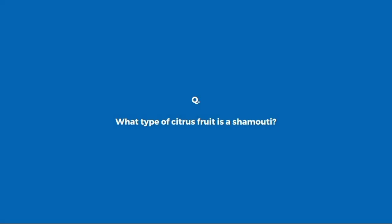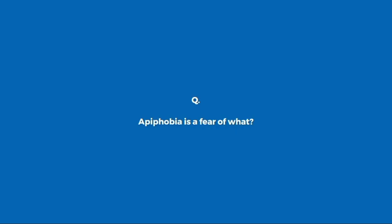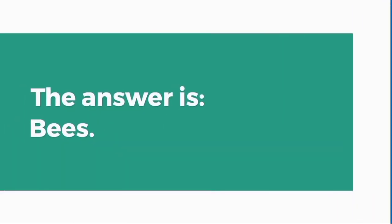What type of citrus fruit is a shamuti? Orange. Eirenophobia is a fear of what? Peace.